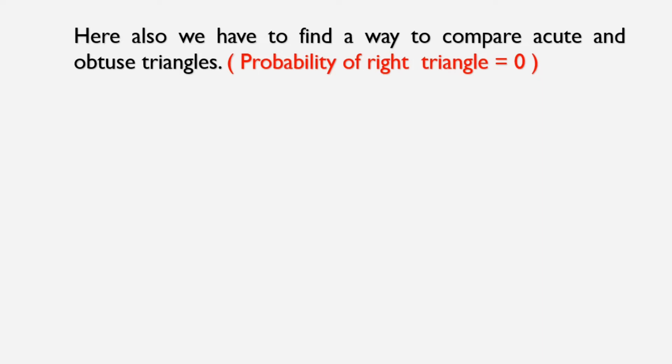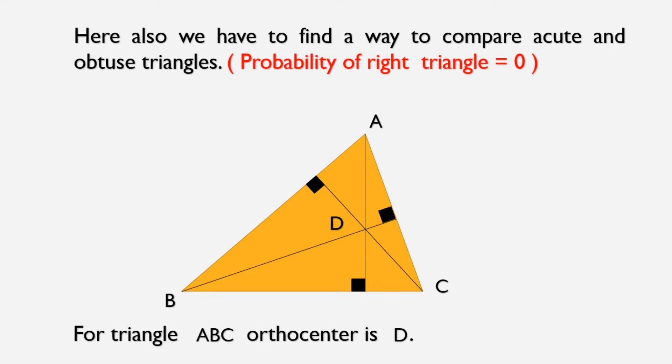So let's start with randomly selecting 3 points in the plane A, B, C and form a triangle by them. Now draw a perpendicular from the vertices to the opposite sides. Here we got D as an orthocenter. So for triangle ABC orthocenter is D.